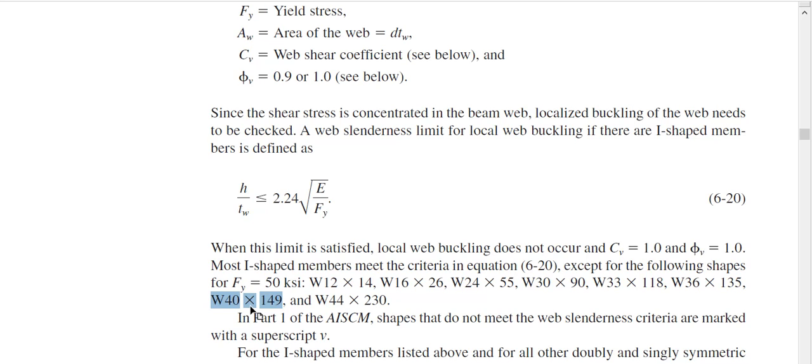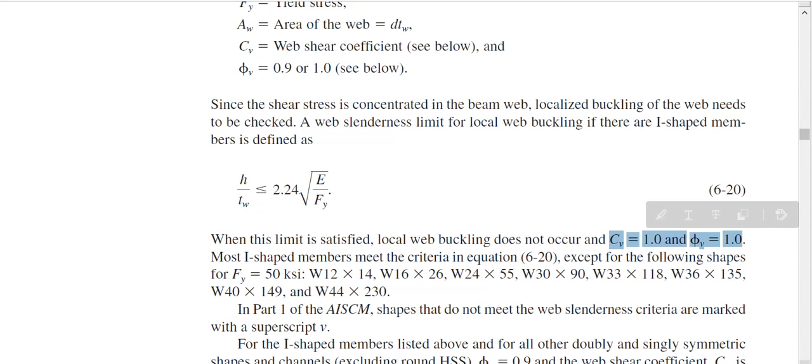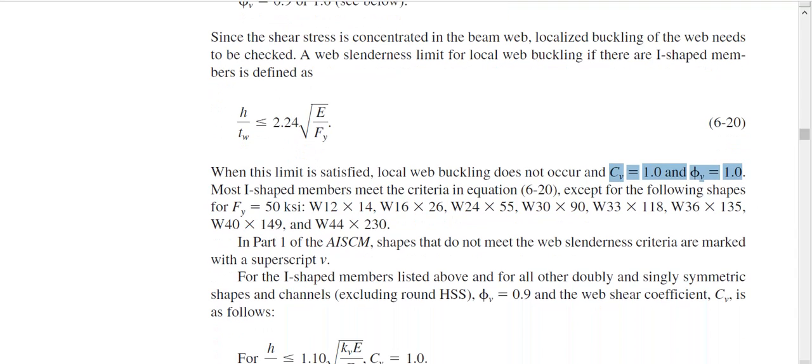So whenever there is a superscript of V, that section is not satisfying this condition. That means for that section, you cannot use these two values. For those sections, you have to find this value. Now how to find this? That's another study we will discuss. But before that, again, if you open your AISC manual and if you do not see any superscript V, then you can assume that Cv and phi V both are one. So that will make your life easy.